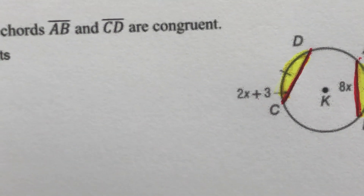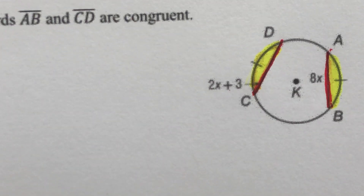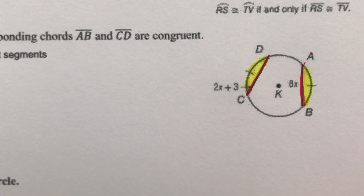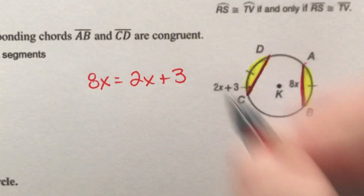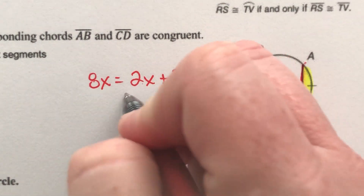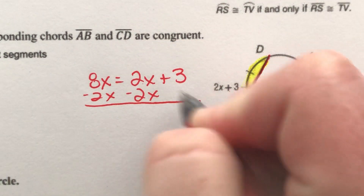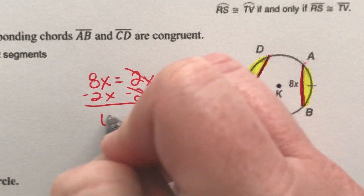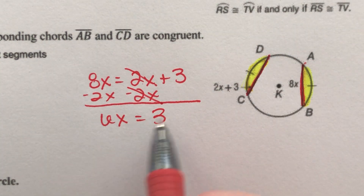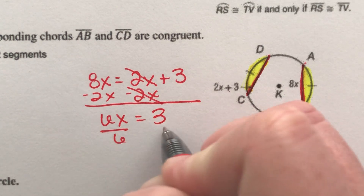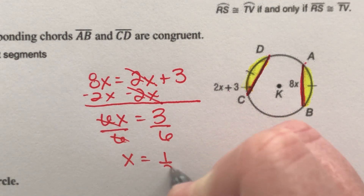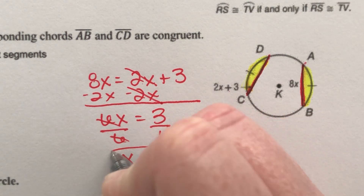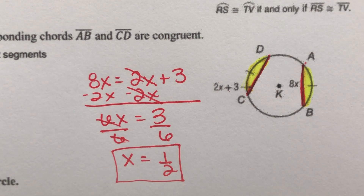So I say 8X equals 2X plus 3. Subtract 2X from both sides — these go away. 6X equals 3. Divide both sides by 6 to get X alone. X equals 3 over 6, which is the same thing as one half. So X is equal to one half.